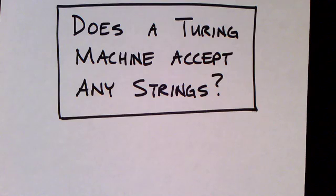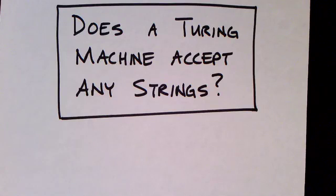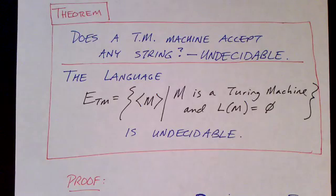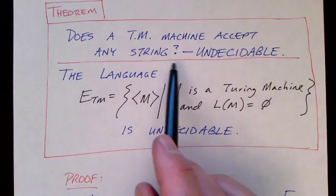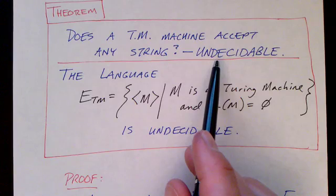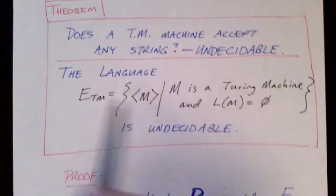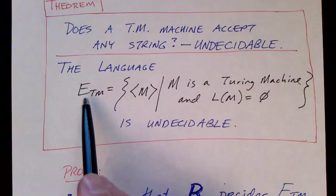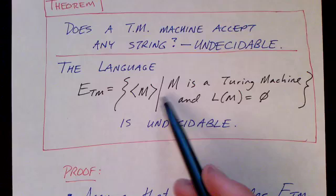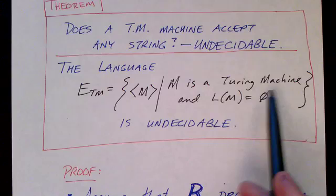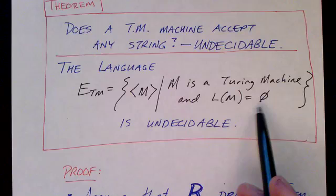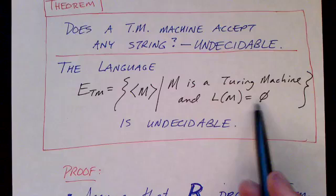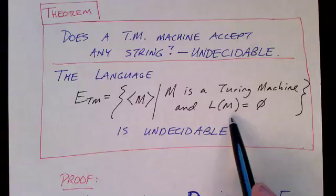Does a Turing machine accept any strings at all? Or is the language defined by a given Turing machine the empty language? That problem is undecidable, and in this video we'll give a proof of that using our technique of reduction. More formally, E_TM — the emptiness language — consists of encodings of Turing machines M such that M accepts no strings. Our theorem is that that language is undecidable.